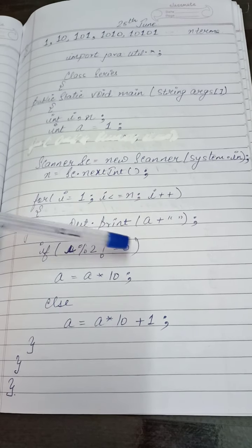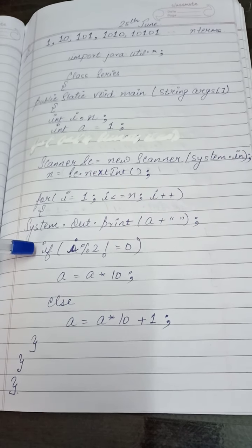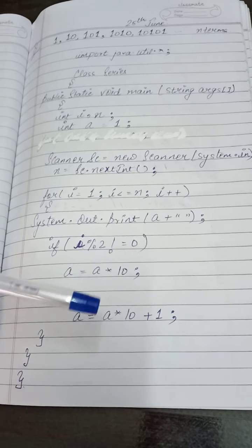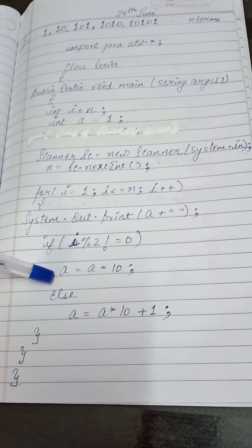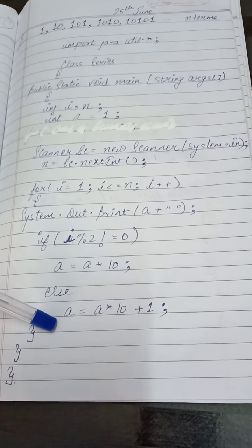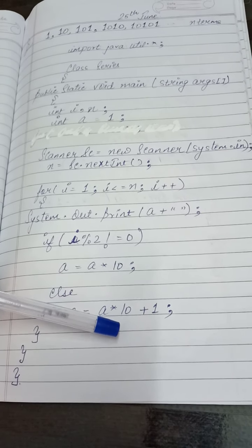Now system.out.print a and space. Now I have put the condition. If i modulo 2 not equal to 0, it will do a is equal to a into 10. Else it will perform this calculation. a is equal to a into 10 plus 1.